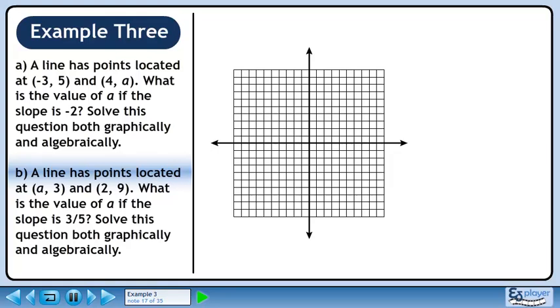Now we'll move on to part b. A line has points located at (a, 3) and (2, 9). What is the value of a if the slope is 3/5? Solve this question both graphically and algebraically.